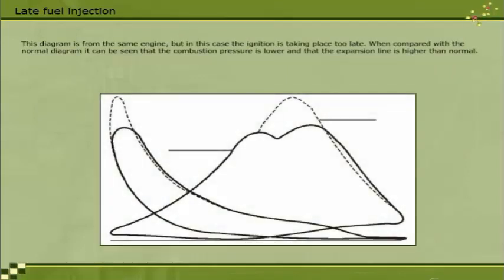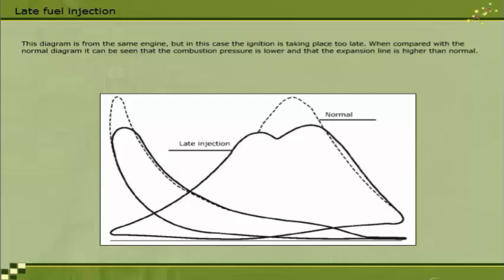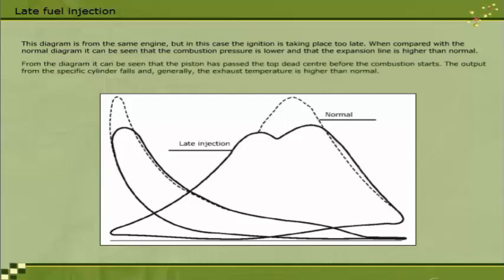This diagram is from the same engine, but in this case the ignition is taking place too late. When compared with the normal diagram, it can be seen that the combustion pressure is lower and that the expansion line is higher than normal. It can be seen that the piston has passed the top dead centre before the combustion starts.